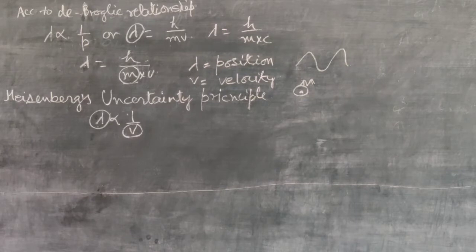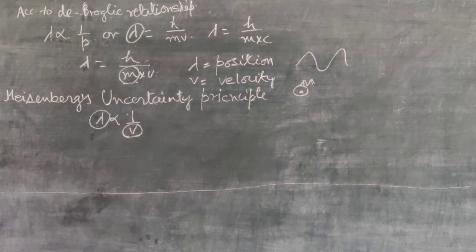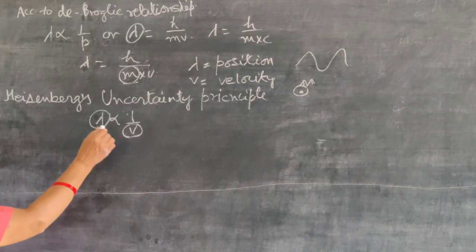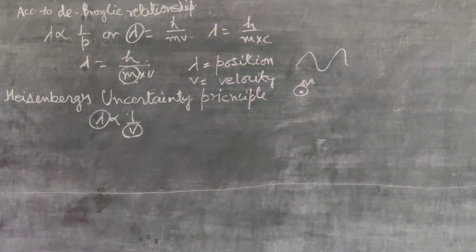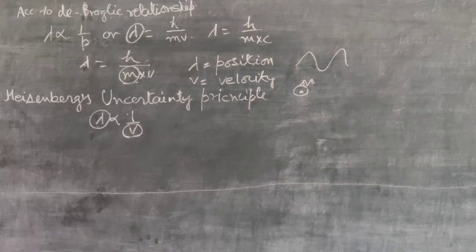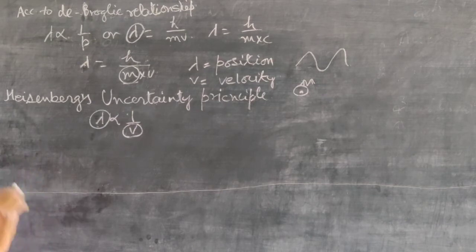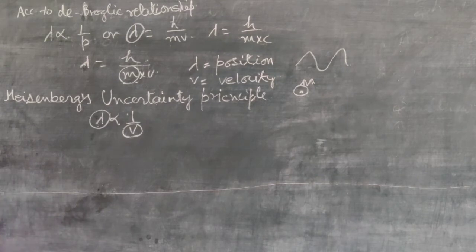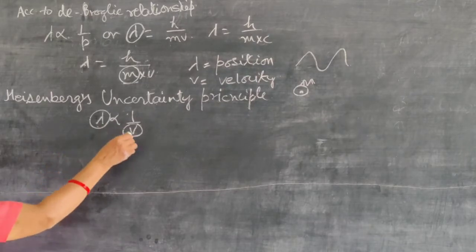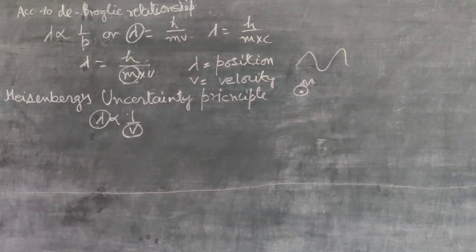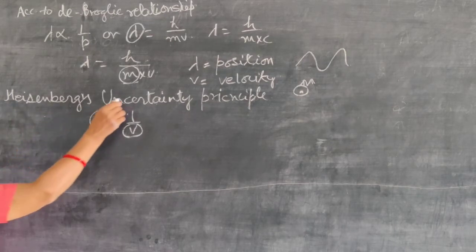Heisenberg's uncertainty principle gives the relation between lambda and velocity - these two properties are inversely proportional. For the subatomic particles which behave like a wave, their position and velocity cannot be determined precisely simultaneously. The position and velocity cannot be determined accurately at the same time. This is Heisenberg's uncertainty principle.